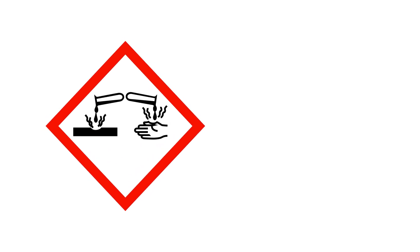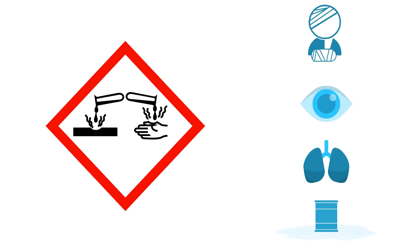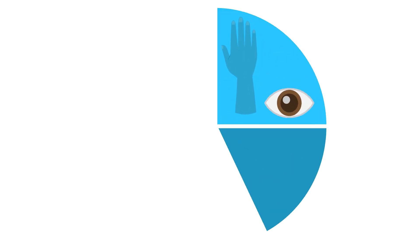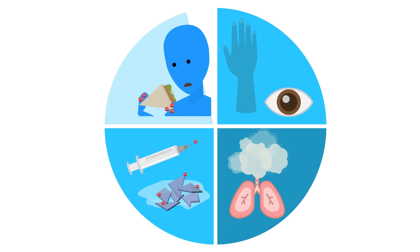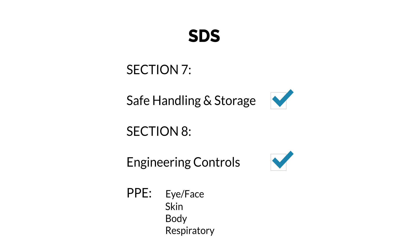The corrosive symbol is found on strong acids and alkalis that cause severe skin, eye and respiratory tract injuries, as well as metal corrosion. The critical vulnerabilities are soft tissues, inhalation, injection, and ingestion. Other considerations are listed in Section 7 and 8 of the SDS.